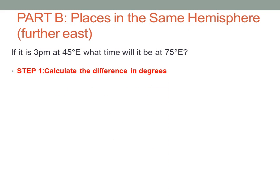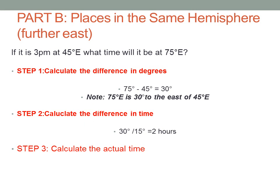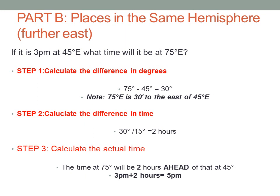Therefore, our first step is to calculate the difference in degrees. We are going to subtract 45 degrees from 75 degrees, which will give us 30 degrees. Note that 75 degrees east is 30 degrees to the east of 45 degrees east. Our second step is to calculate the difference in time: 30 degrees divided by 15 gives us 2 hours. Our third step is to calculate the actual time. The time at 75 degrees east will be 2 hours ahead of 45 degrees east, so 3 p.m. plus 2 hours gives us 5 p.m.